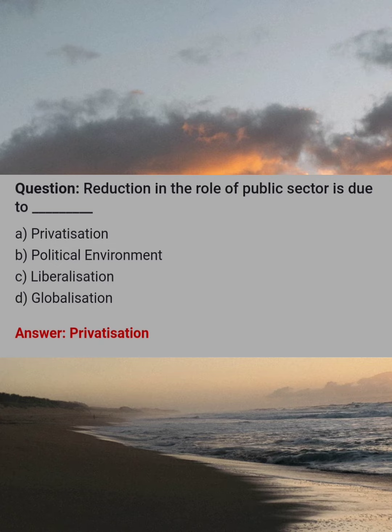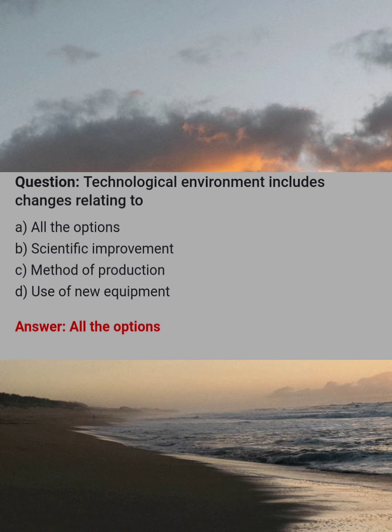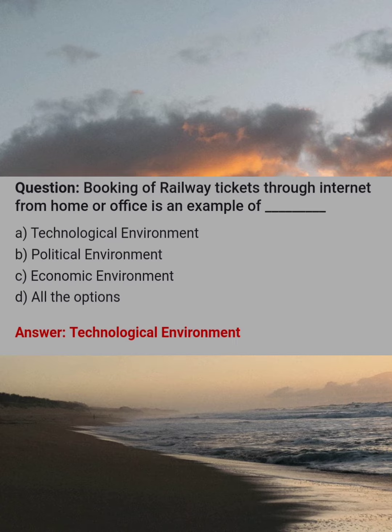Reduction in the role of public sector is due to dash. Answer: A, privatization. Technological environment includes changes relating to? Answer: A, all the options. Booking of railway tickets through the internet from home or office is an example of dash. Answer: A, technological environment.